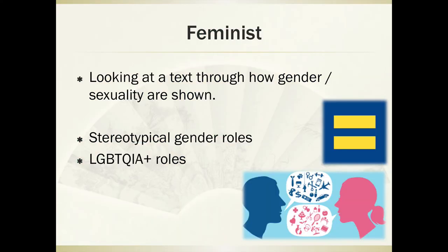The next lens is the feminist lens. Yes, it says feminist and the root seems to be female, but this lens is not only about women. Basically, we're looking at a text through how gender and sexuality are shown. We look at stereotypical gender roles and how they're portrayed — in a positive fashion, questioned, or challenged? Do characters seek to break out of stereotypical boxes? We also examine LGBTQIA+ roles: do we have characters who are gay, transitioning, or questioning? How do those characters work within the text, and how do other characters react to them? Those are all elements of the feminist lens.